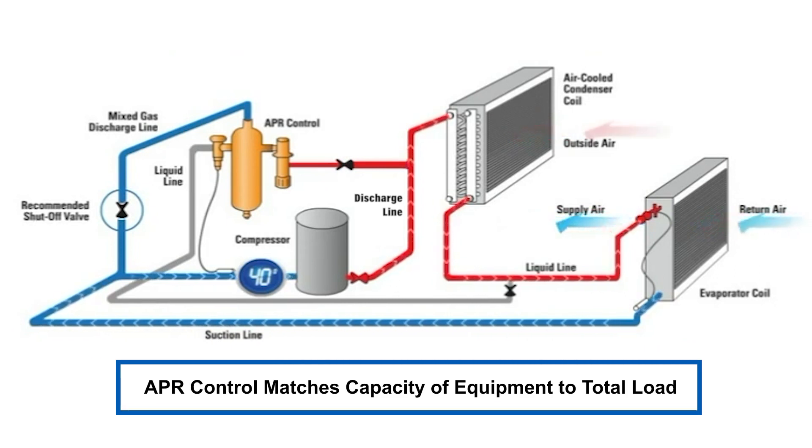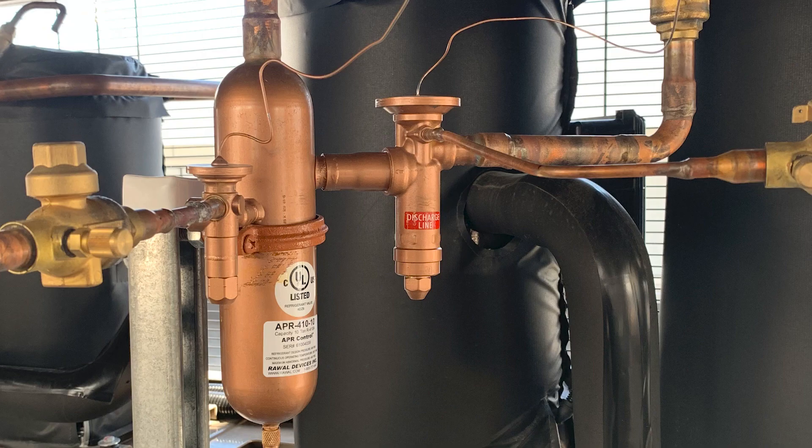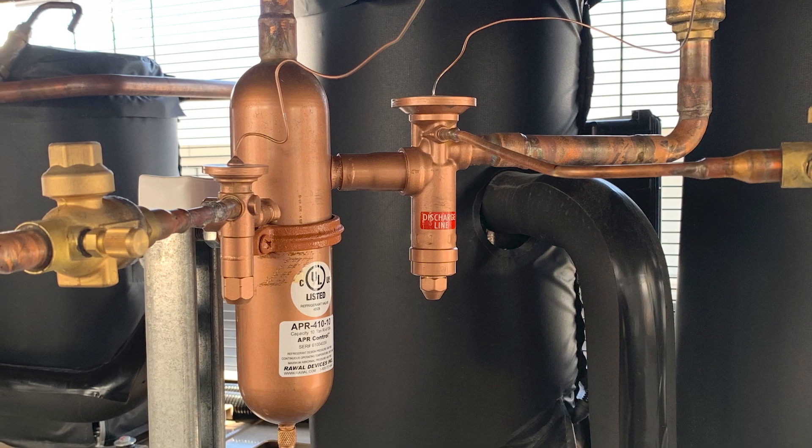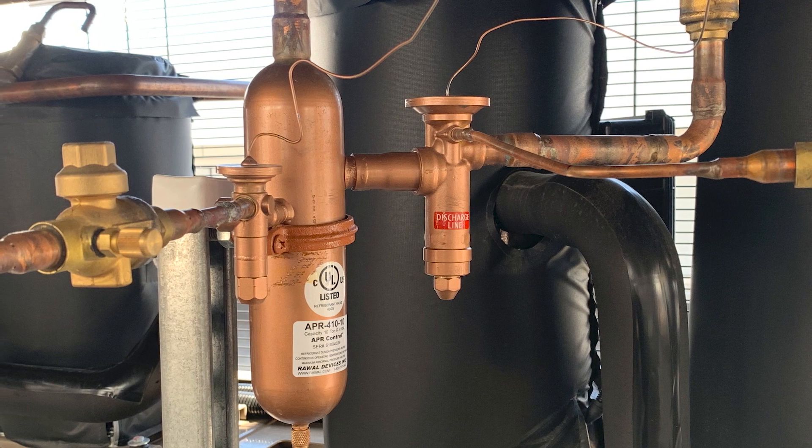During a mechanical failure like a broken TXV or loose belt, the APR diverts refrigerant into the suction lines so the liquid refrigerant never reaches the compressor. This is how the APR minimizes and ultimately prevents floodback.